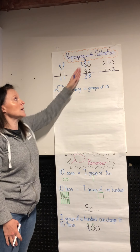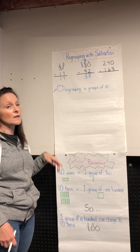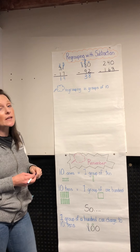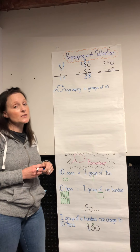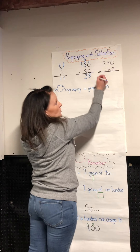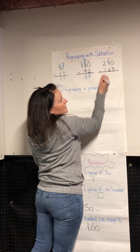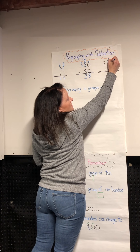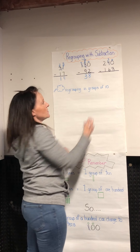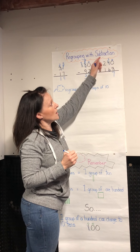That one's a little tricky because I had to regroup two times, but as long as I do each column at once and remember I'm always bringing over in groups of ten, it's okay. Let's try the next one: two hundred and forty take away one hundred and sixty-three. Zero can't take away three, so let's go into our tens column and borrow a group of ten. That group of ten becomes ten ones — now we have ten take away three, and we have seven.